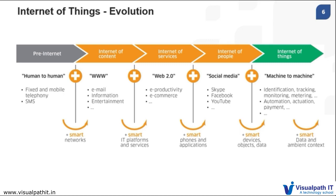We can say machine-to-machine communication started — such as identification, tracking, monitoring, metering, automation, actuation, payment, and so on. All of this comes under the Internet of Things. So when was Internet of Things introduced to the world? In 1999, the world was first introduced to IoT and its technologies, which helped develop various sectors and industries. These are the evolutions that happened in the technological industries.